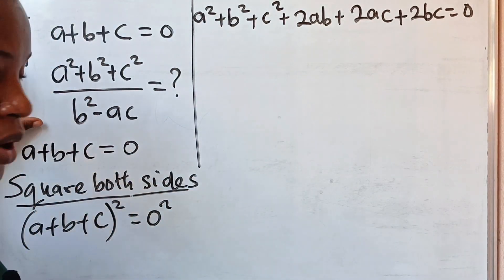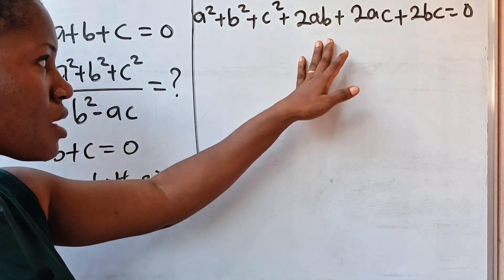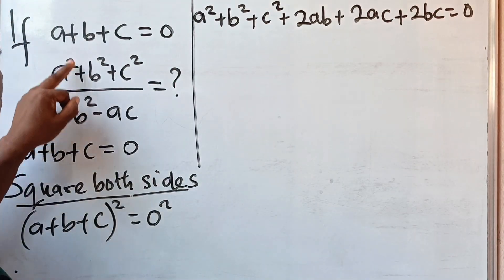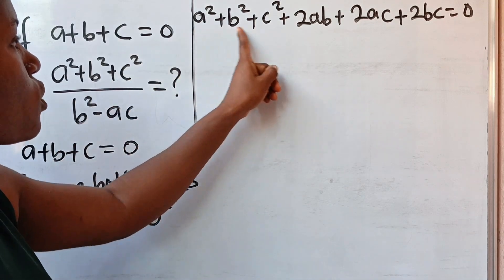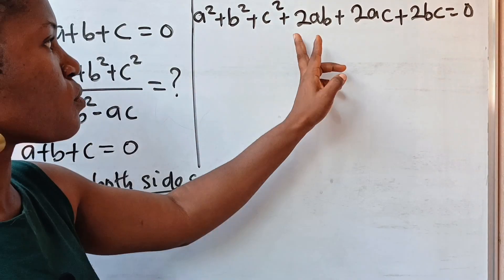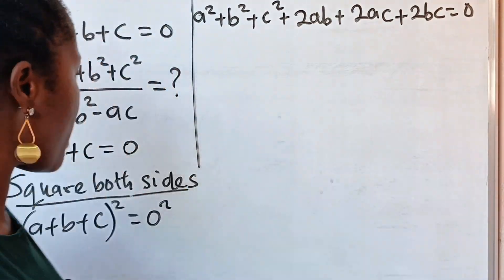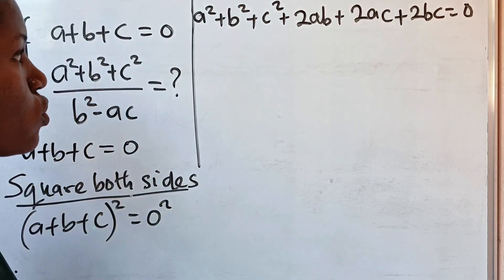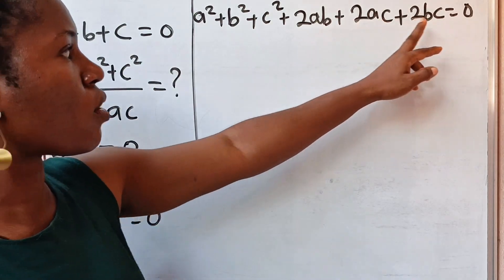Now, remember — look at the question. We are trying to manipulate this to look like the expression we need, right? In this question, we are looking for a squared plus b squared plus c squared. We have gotten it here, so we won't touch this again. We are now going to try to manipulate the remaining part of this equation to get b squared minus ac.